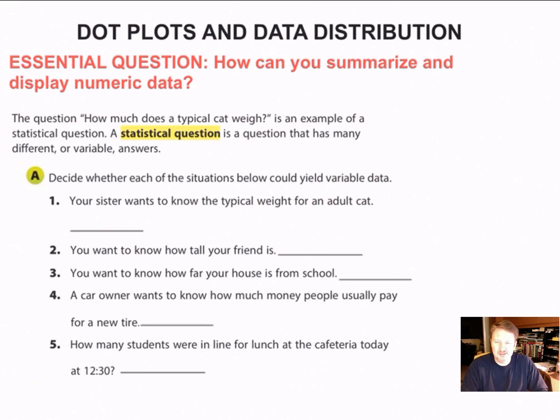So first thing I want to talk about is statistical questions. The question how much does a typical cat weigh is an example of a statistical question. And a statistical question is a question that has many different or variable answers. So we're going to look at this little example I have here and determine whether or not these are going to be statistical questions. Right before I give you the answer, I'm going to pause the video, and you're going to answer whether you think it's a statistical question or not.